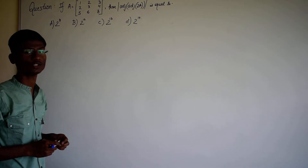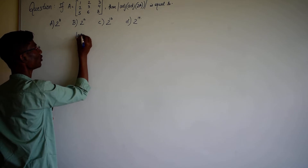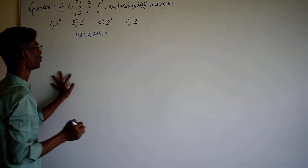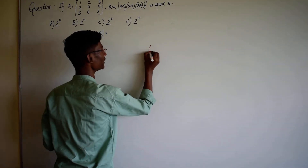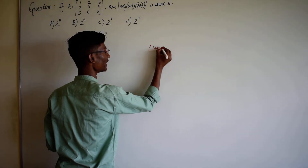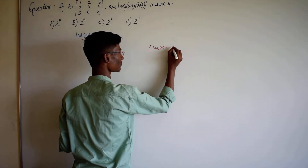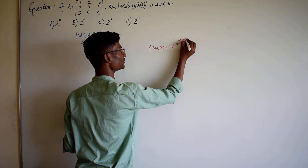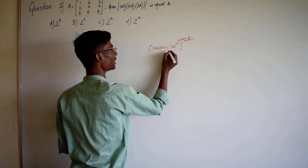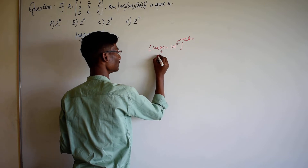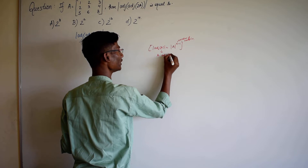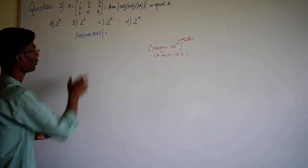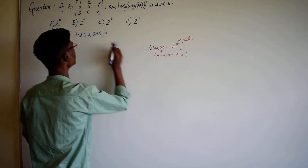So here we can use the properties of determinant to solve this. We know the property that determinant of adjoint A is equal to determinant of A raised to power n minus 1, where n is the order of the matrix. You can also derive this relation by using the identity: A times adjoint of A equals determinant of A times the identity matrix.